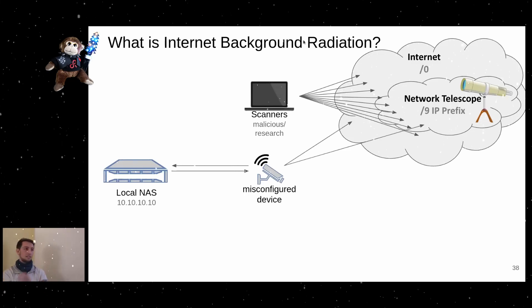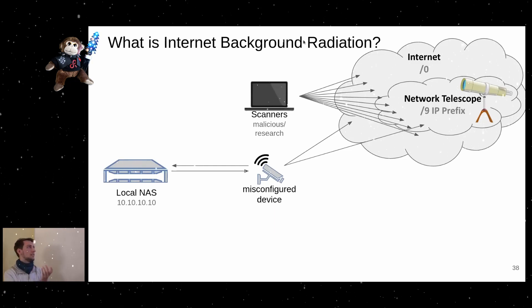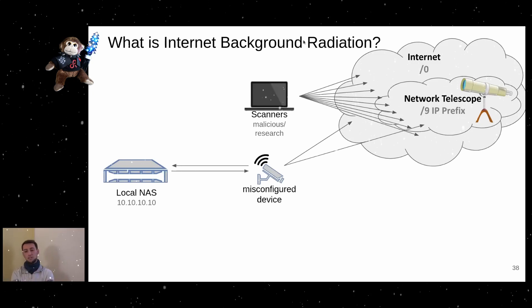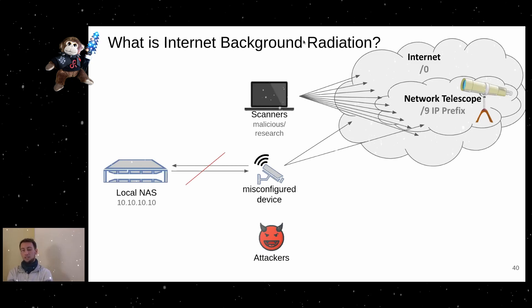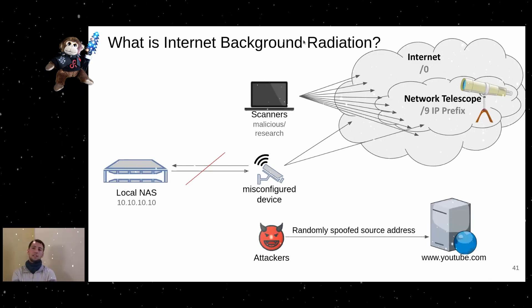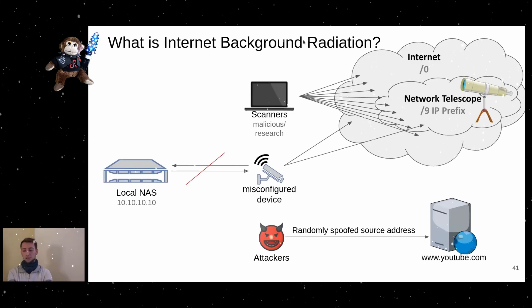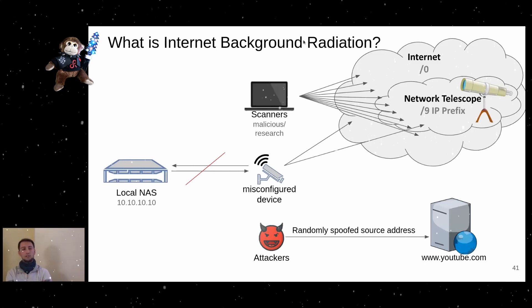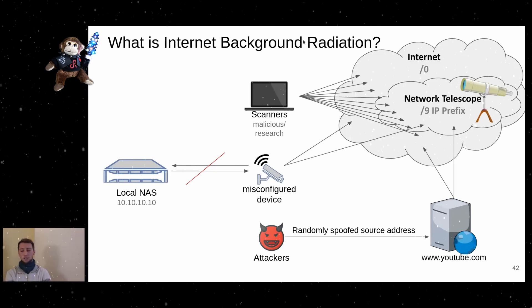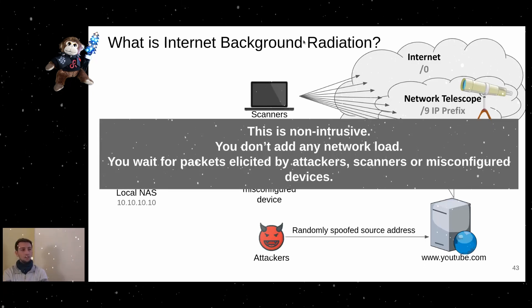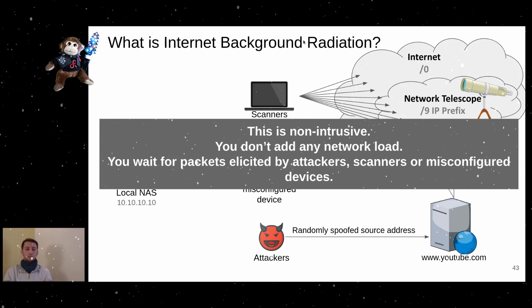Attackers try to exhaust state on popular services — for example, using up all ports by spoofing source addresses. If those spoofed source addresses fall within our network telescope's IP range, the response packets end up at our telescope and we can observe them. The beauty of this is that it's non-intrusive: we don't send any additional packets; we just sit and observe.